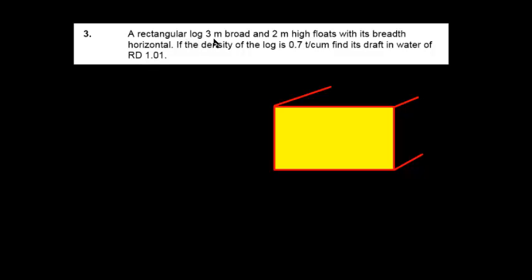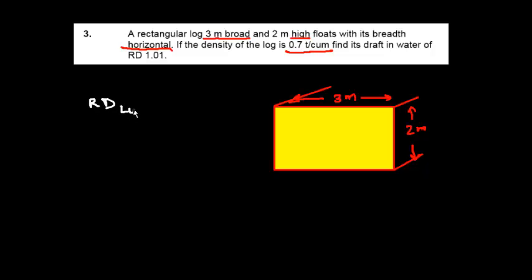Here is a rectangular log which is 3 meters broad and 2 meters high. It floats with its breadth horizontal, so it is 3 meters in this direction and 2 meters high. The relative density of the log is 0.7. We need to find the draft — the water line is shown here.